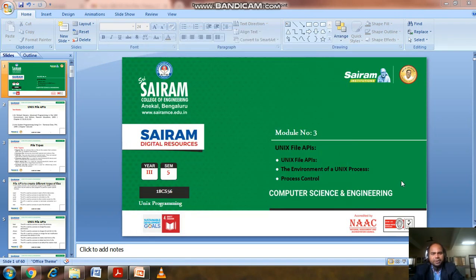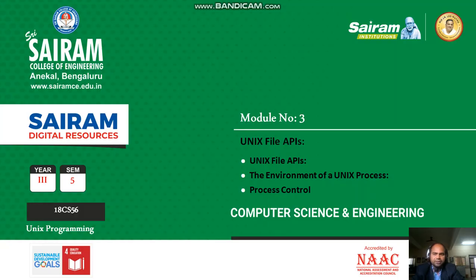Dear students, I am going to discuss the third module of Unix programming. In this module, there are three chapters we have to study. The first one is Unix file APIs. The second chapter is the environment of a Unix process. And the third chapter which we have to study is process control.